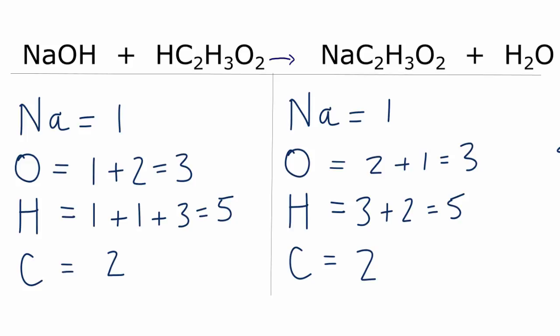We have a lot of odd numbers in this equation. That makes it sometimes difficult to balance, except that the odd numbers are the same on both sides of the equation, so it's already balanced. This is Dr. B with the balanced equation for sodium hydroxide plus acetic acid yields sodium acetate plus H2O water. Thanks for watching.